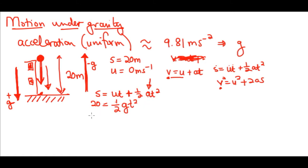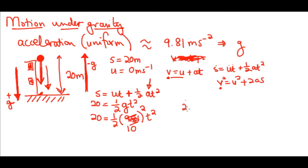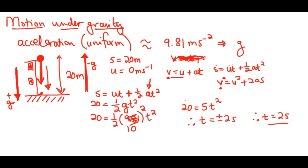Since our object is dropping, its acceleration is positive g. We substitute g = 10 m/s² (rounding 9.81 for easier calculation). So: 20 = ½ × 10 × t², which simplifies to 20 = 5t², giving t² = 4, so t = ±2 seconds. We take the positive value, so t = 2 seconds, since time doesn't have negative values in this context.